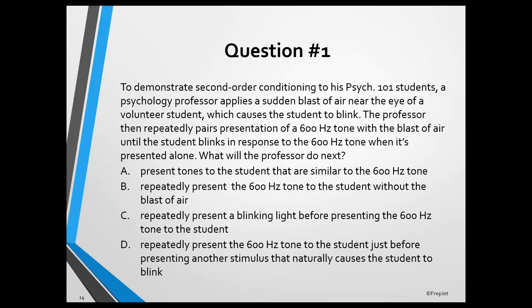What will the professor do next? A: present tones to the student that are similar to the 600 Hertz tone. B: repeatedly present the 600 Hertz tone to the student without the blast of air. C: repeatedly present a blinking light before presenting the 600 Hertz tone to the student. Or D: repeatedly present the 600 Hertz tone to the student just before presenting another stimulus that naturally causes the student to blink.